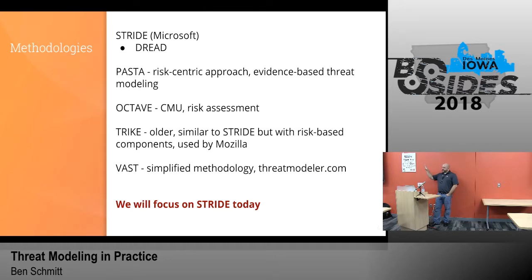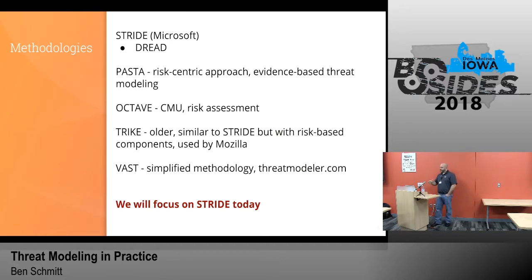There are methodologies out there. We're going to talk about STRIDE today. STRIDE is an acronym — Spoofing, Tampering, Repudiation, Information Disclosure, Denial of Service, and Elevation of Privileges. There's also a correlating risk assessment called DREAD we'll touch on. PASTA is another approach — it's more risk-centric and evidence-based, bigger and meatier. If you want to do research afterwards, look at both STRIDE and PASTA. OCTAVE from Carnegie Mellon is more of a risk assessment. Trike is older. VAST is another one. ThreatModeler.com has their own simplified methodology, but focusing on STRIDE is the best use of our time today.